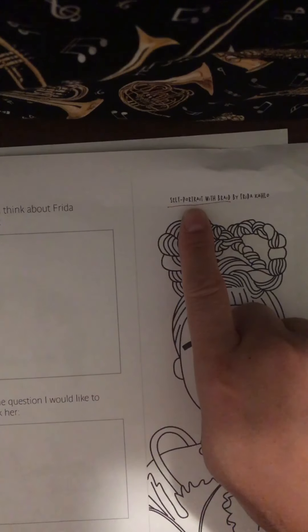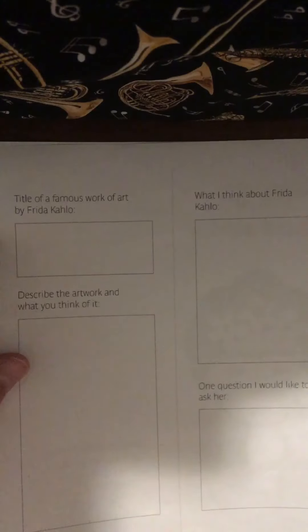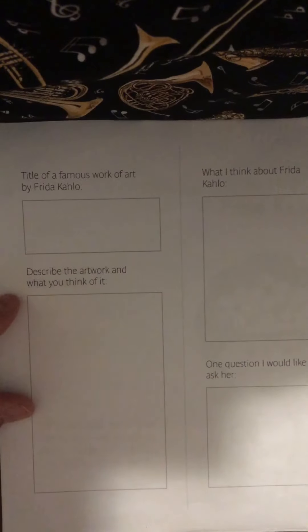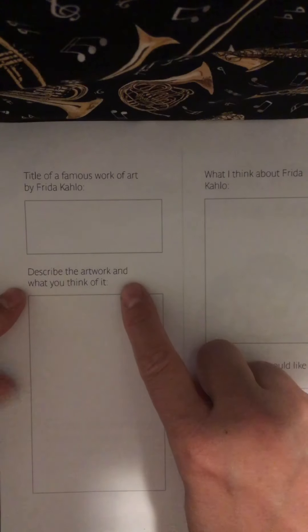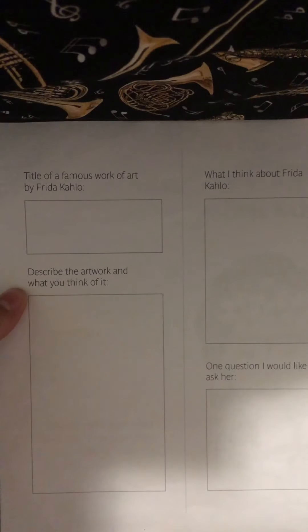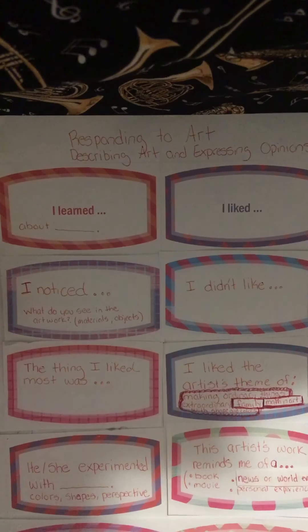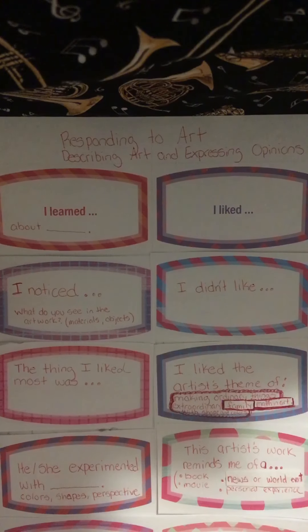Each one of the brochures is the same format — it just features different artists. I also wanted to talk about when it says describe the artwork and what you think of it. You can use your language stems, which are called responding to art, describing art, and expressing opinions, in order to complete that blank.